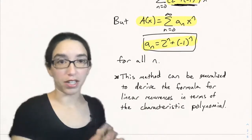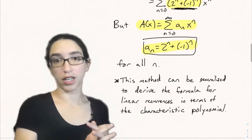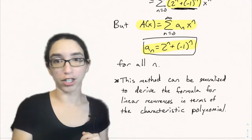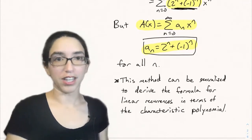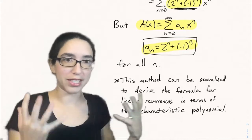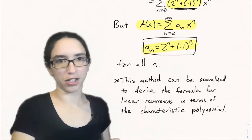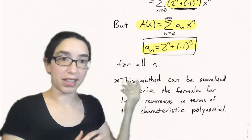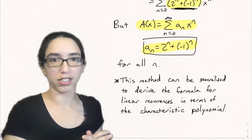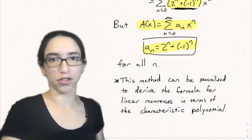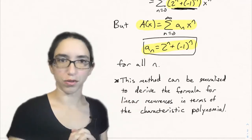This method can actually be generalized to derive the formula for solving linear recurrences in terms of roots of the characteristic polynomial in general. Now you can see where that formula comes from and why the characteristic polynomial comes up — the denominator is essentially a slight modification of the characteristic polynomial, that denominator we factored into two factors.